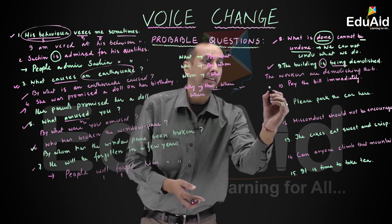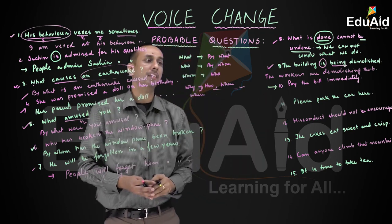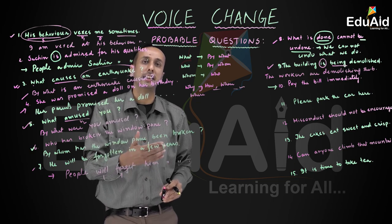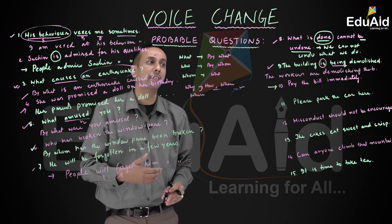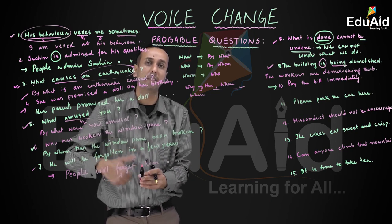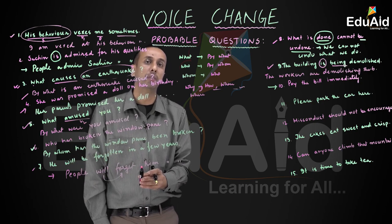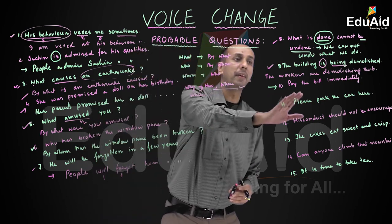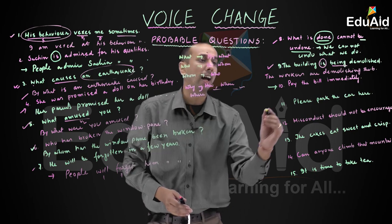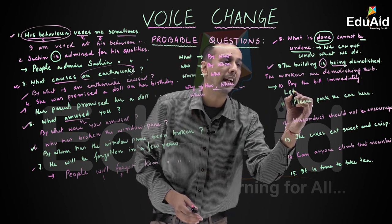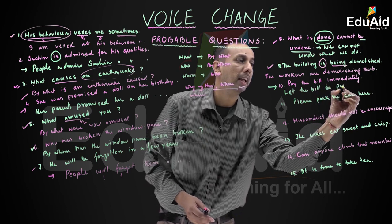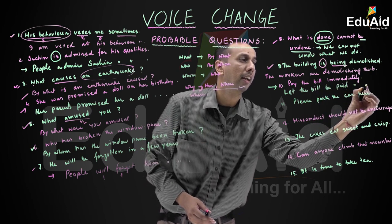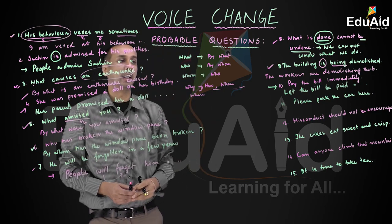Question number ten: 'Pay the bill immediately.' This is an imperative sentence — it starts with a verb, and the subject 'you' remains hidden. In passive, the structure becomes: 'Let the bill be paid immediately.'